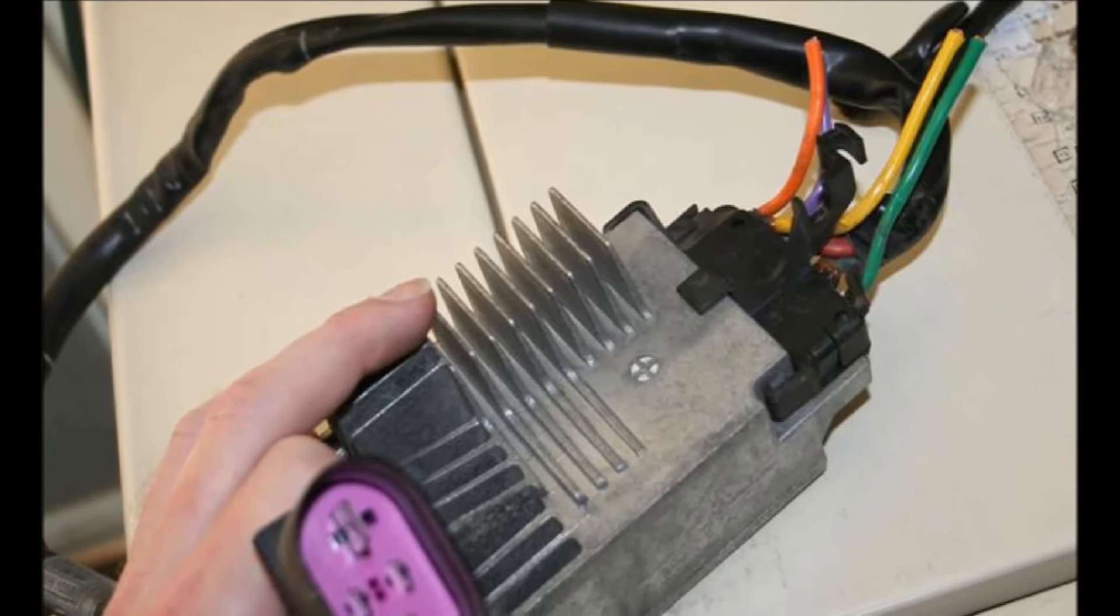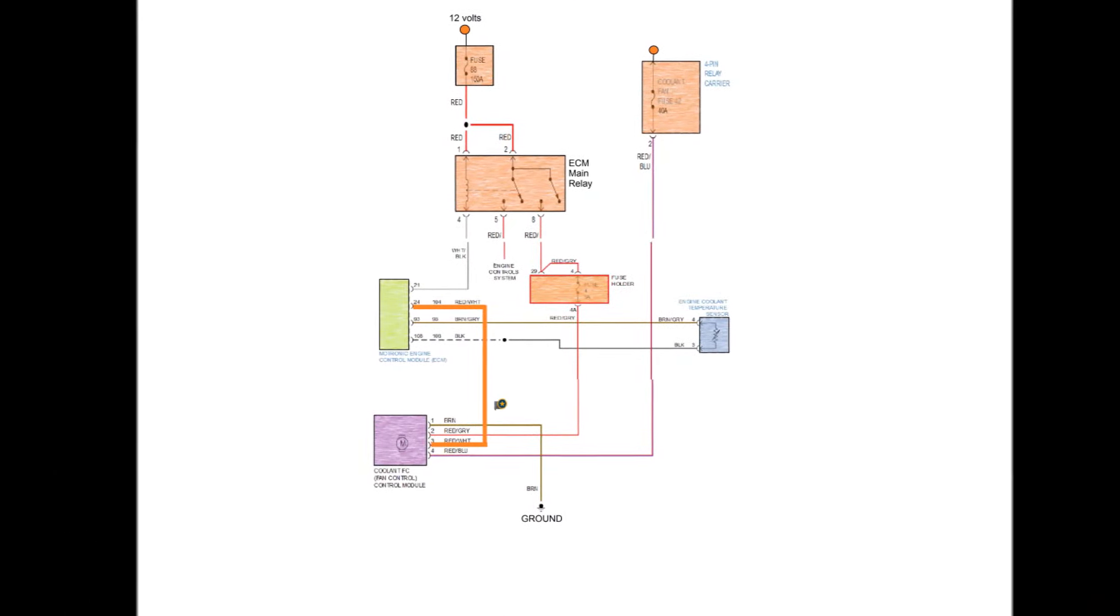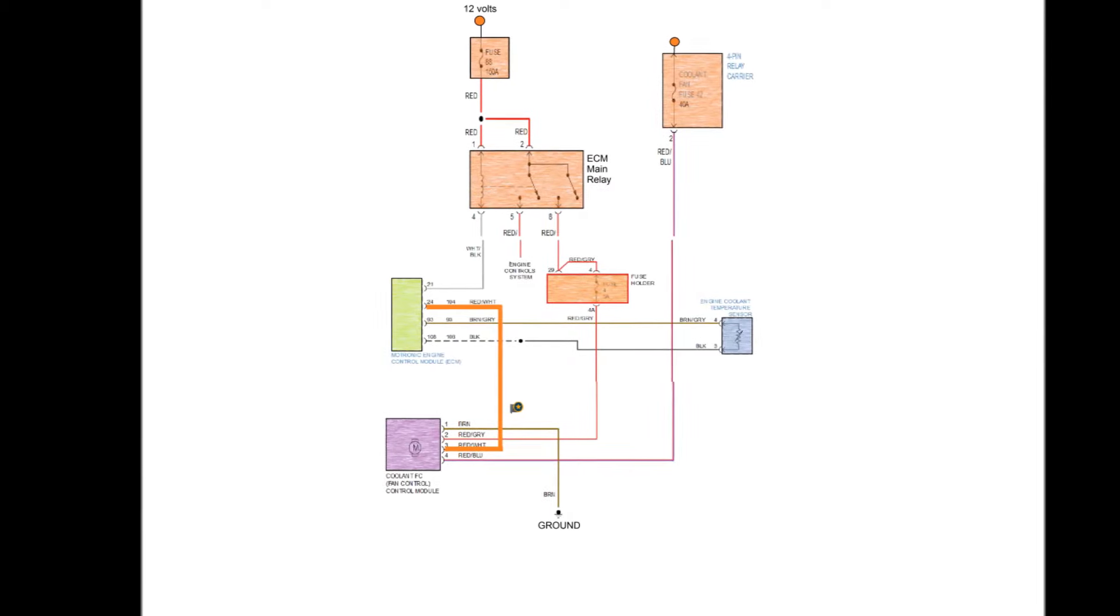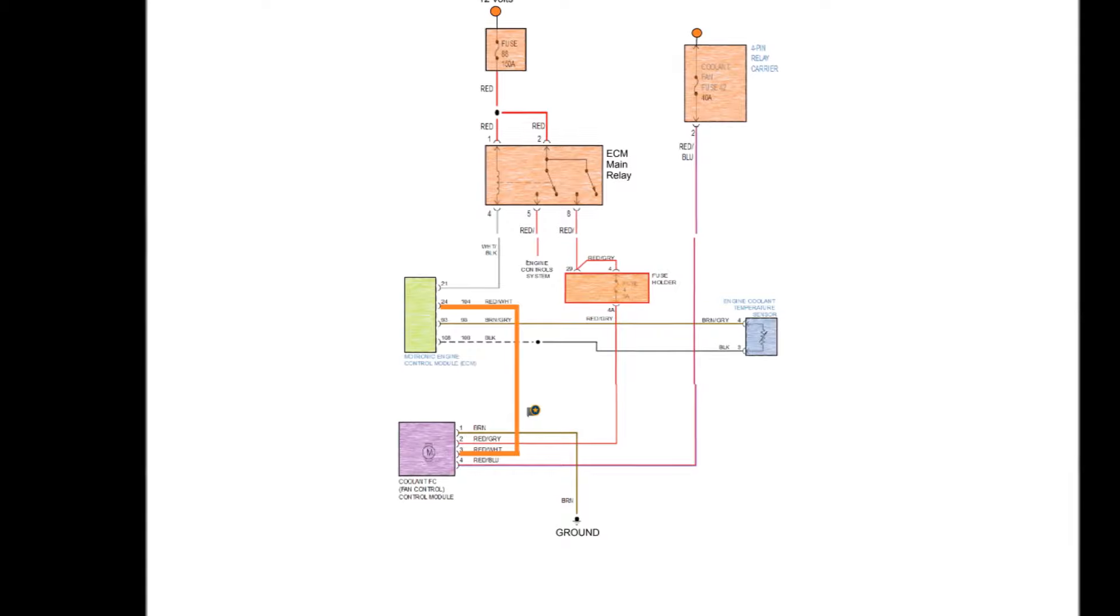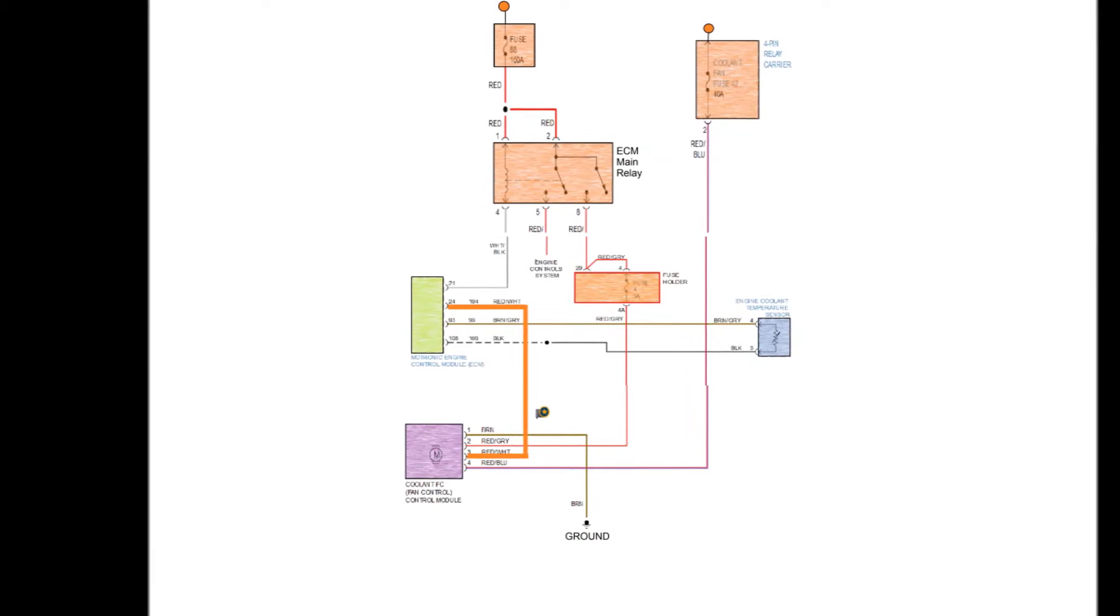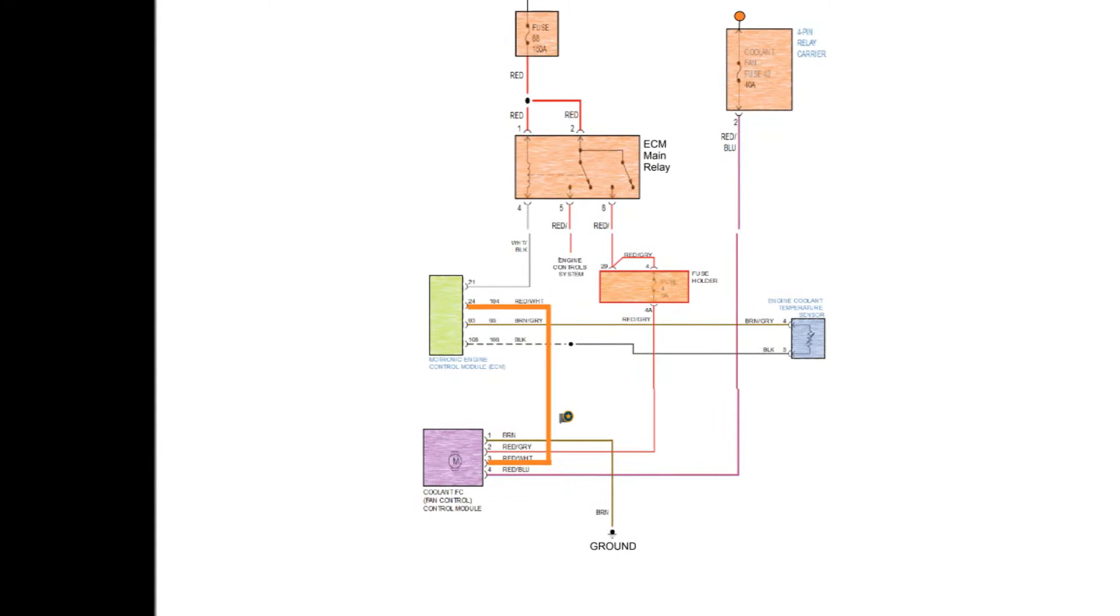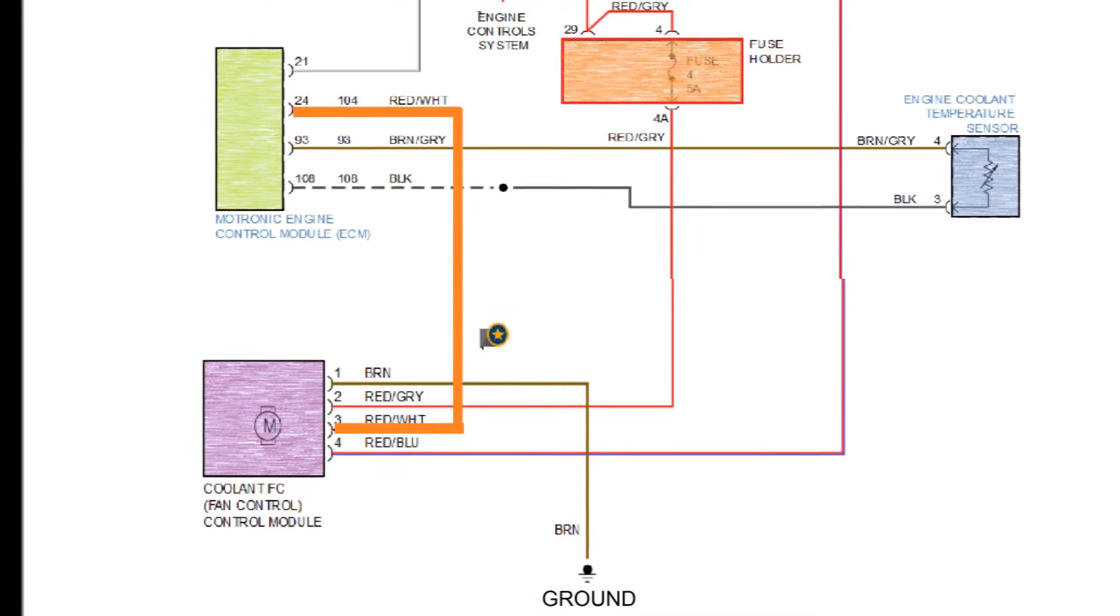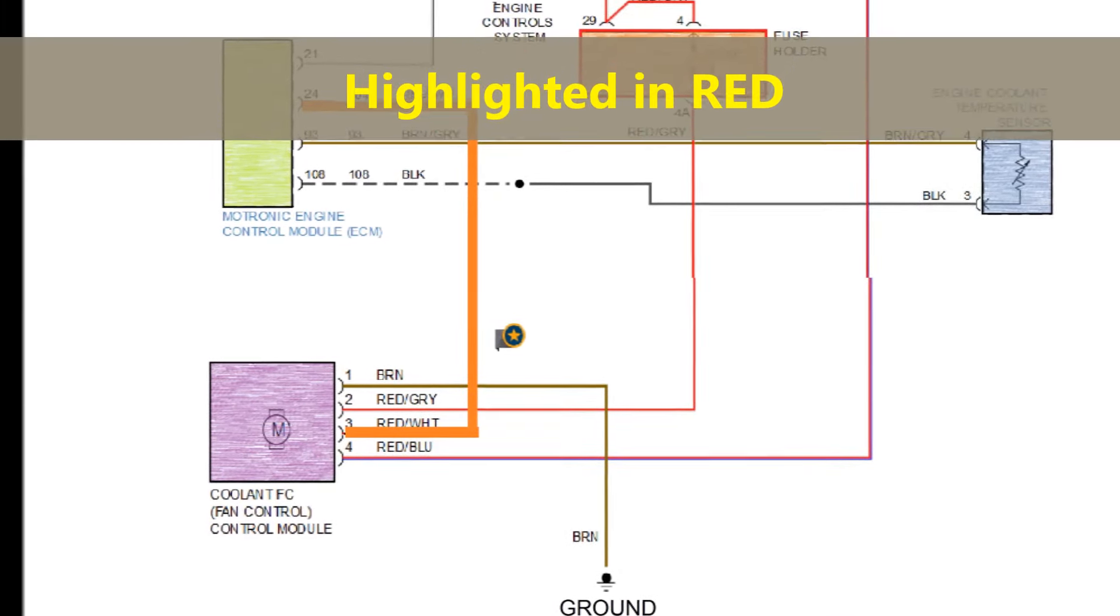Now as you can see on screen, this particular diagram, this is the actual diagram for this car. Pin number 24 on the ECM which is called the Motronic Engine Control Module, it's the same as the ECM, pin number 24 fits pin number 3 and this is the actual control wire and this is important because this is the wire that you're going to use to do your testing assuming that you don't have a scanner that has that capability.